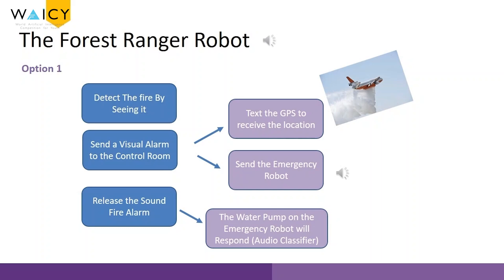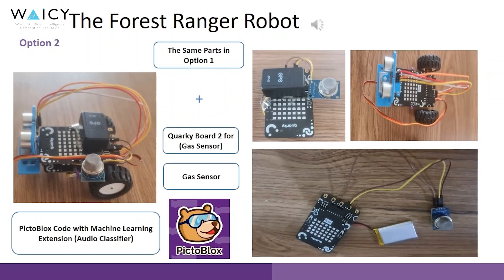We will use GPS to receive the location and send the emergency robot. Also, the robot will release the fire alarm, so the water pump on the emergency robot will respond.